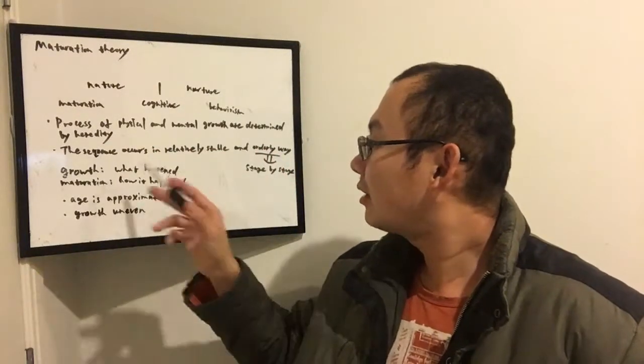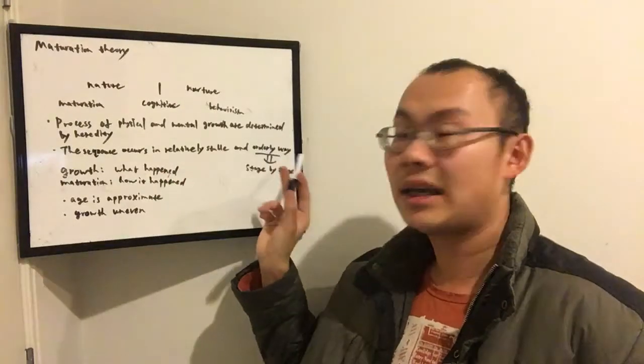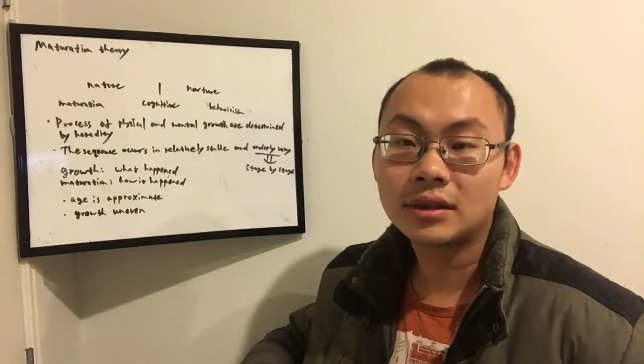Also, the sequence occurs in a relatively stable and orderly way. That means growth is stage by stage. But what is growth?